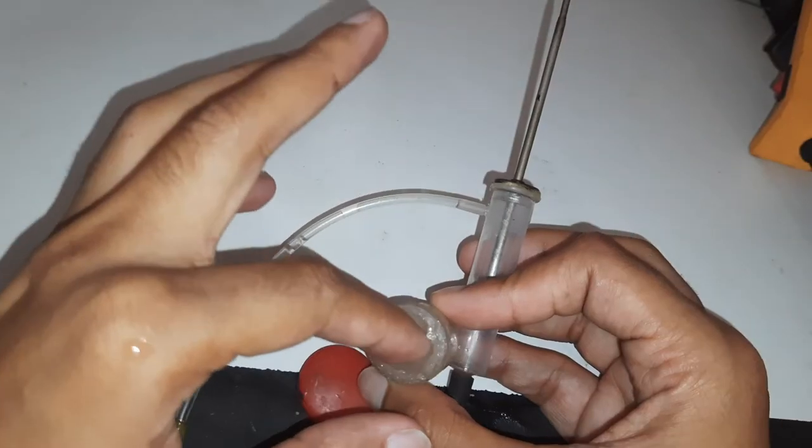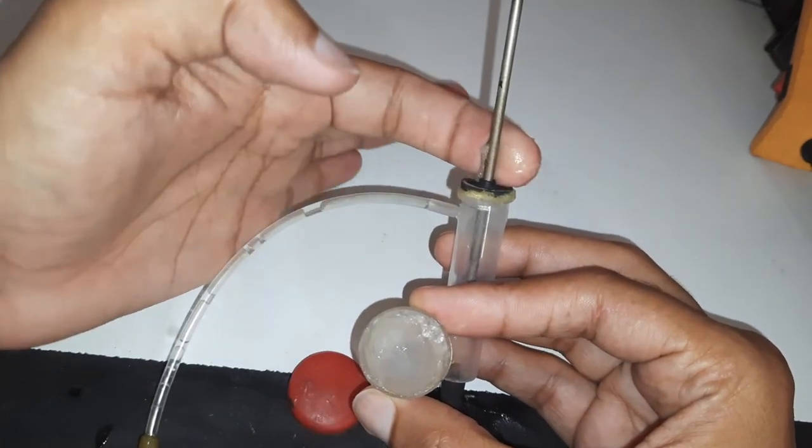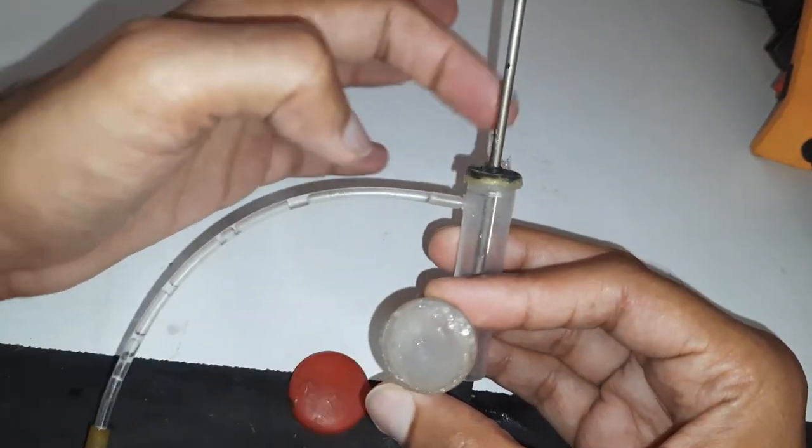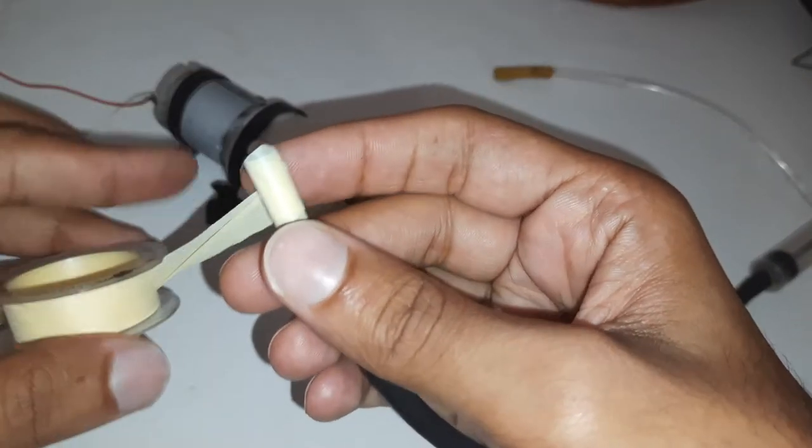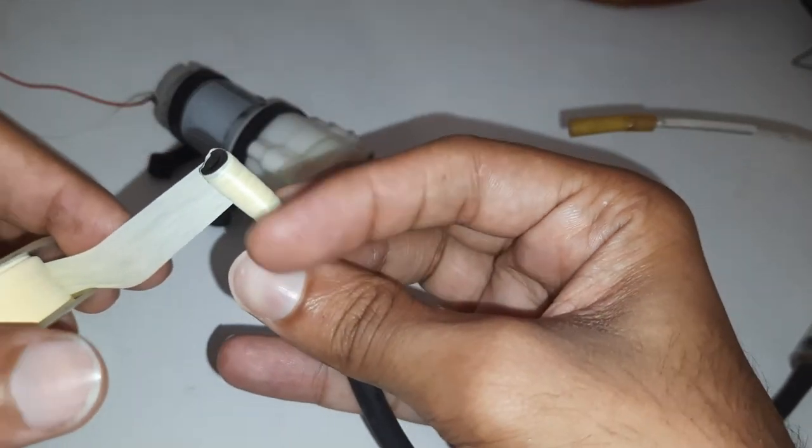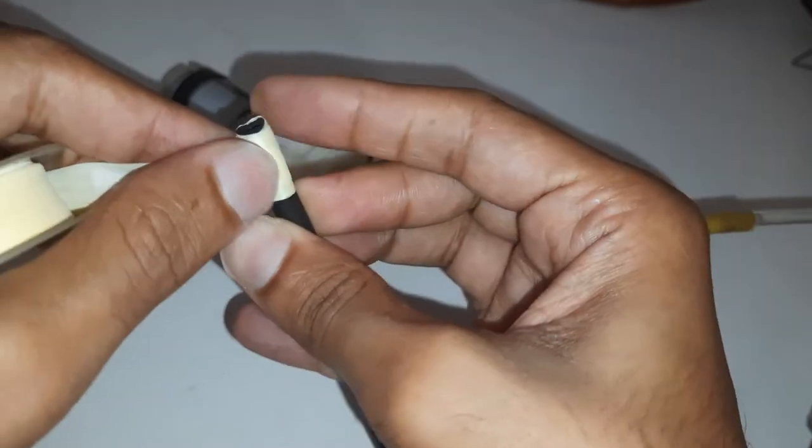To avoid any leakage I am applying this silicon grease to the plunger. Here I am taking a 12-volt water pump to pump the oil.